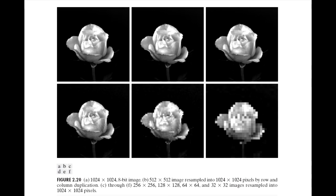Here we can see the effect of spatial resolution. The top-left photo has very good image quality as it has 1024 × 1024 pixels. But as we move to the next images, the sharpness and quality are reduced, and at the bottom-right image it is very much degraded — you have almost lost the essence of the image. This is called pixelation. The original image was 1024 × 1024, and here at the bottom-right we used 32 × 32, which was then resampled back to 1024 × 1024, producing this effect.